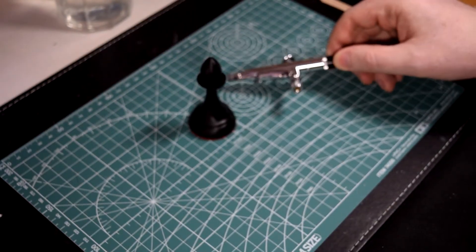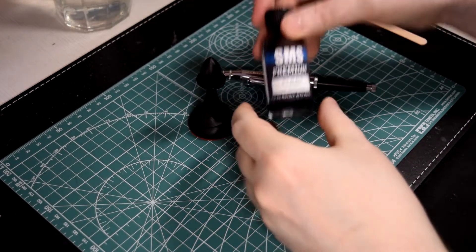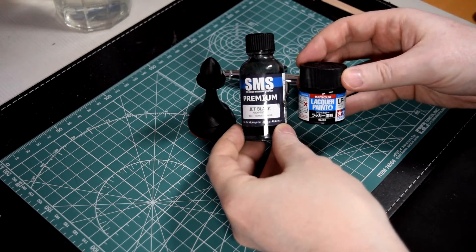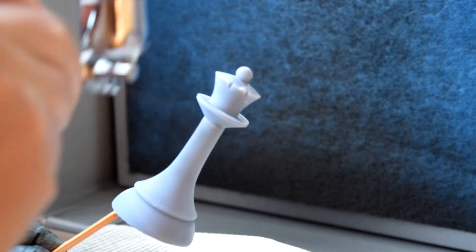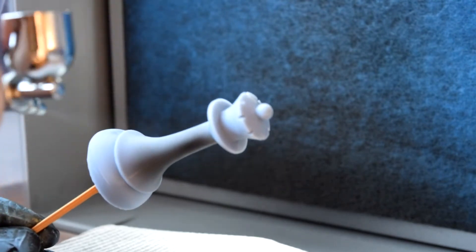If you have an airbrush, then you have more options for the kinds of paints you can use. I recommend lacquer paints. This is SMS's Jet Black Gloss Lacquer Paint, but you can also use Tamiya's. Lacquer paint is essentially thinned down nail polish, so it is very durable. It's great for chess pieces because it won't chip, it's very strong.